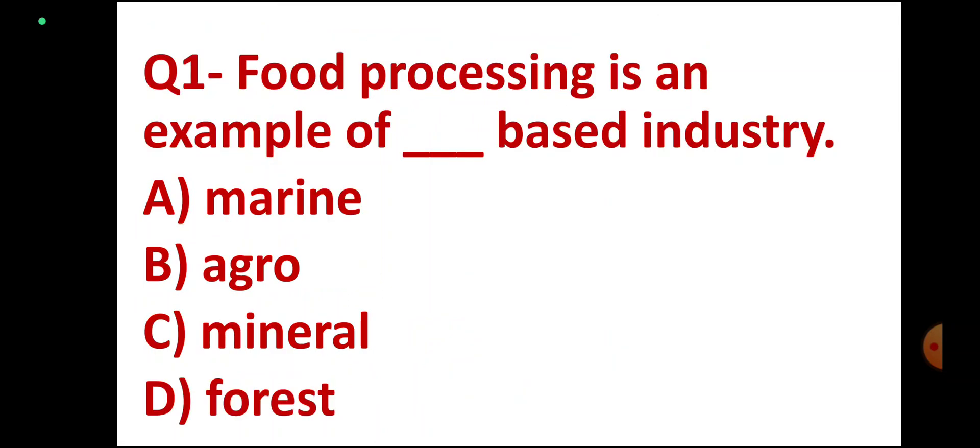Question number 1. Food processing is an example of DASH based industry. Options: Marine based, Agro based, Mineral based, Forest based. Correct answer: Agro based.